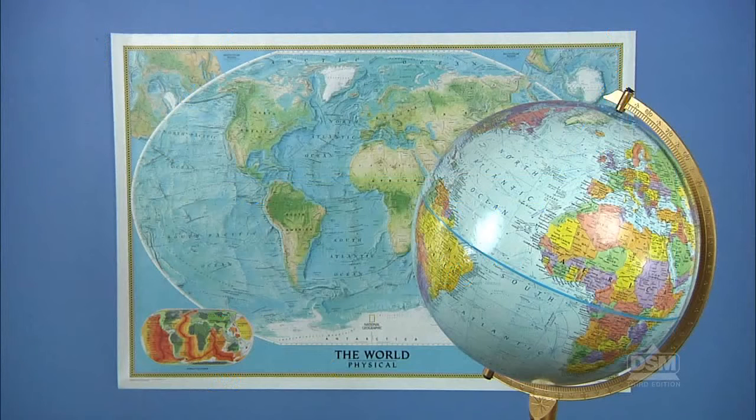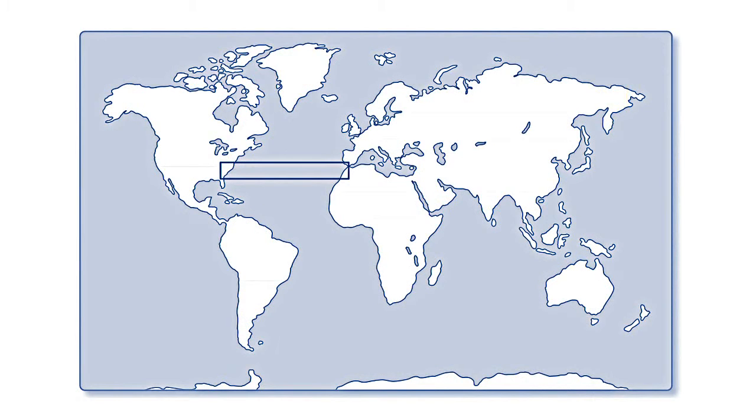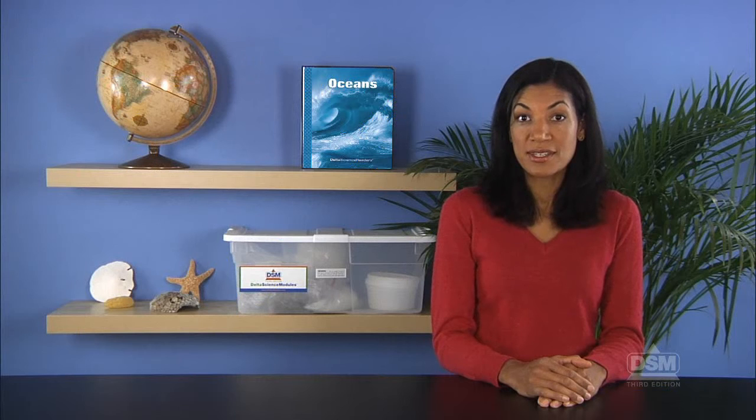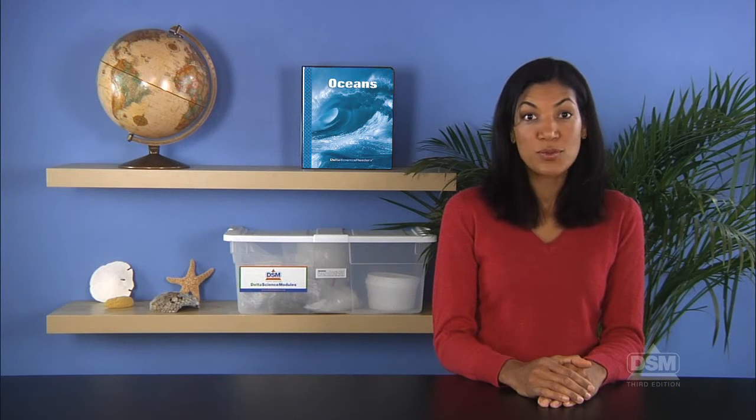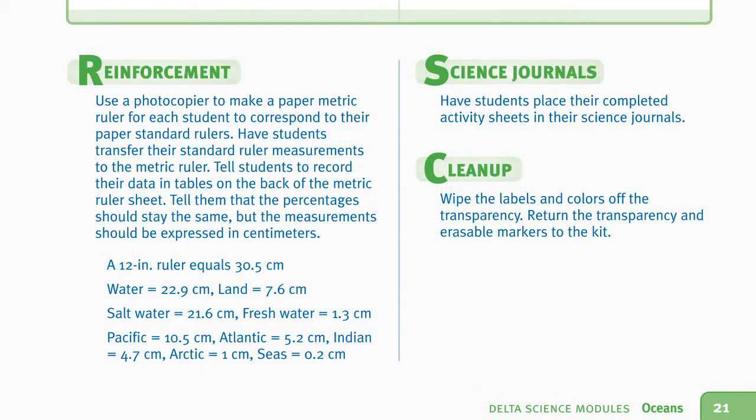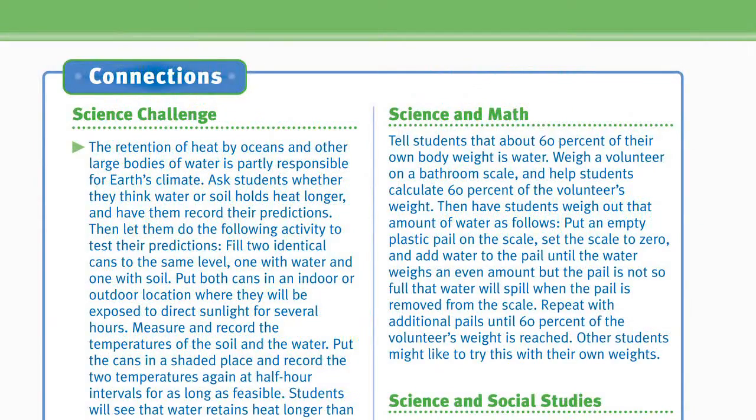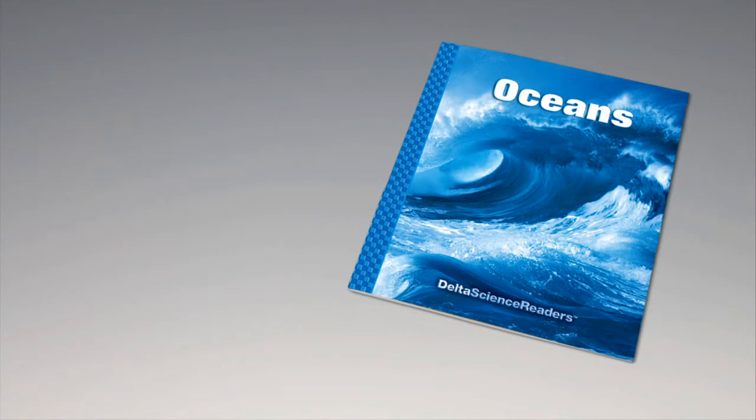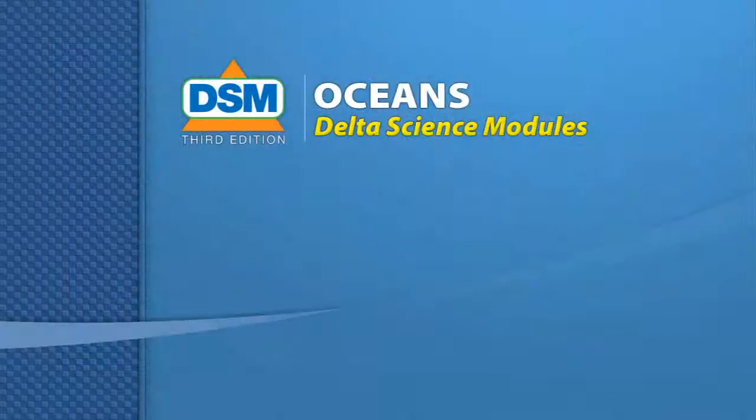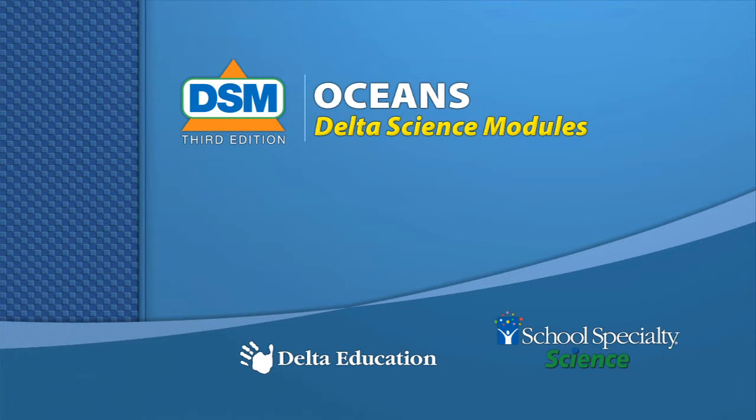Finally, post the physical map of the world ocean, and have students find the section they profiled and compare it with their own maps. To conclude the activity, discard the paper scraps. Make sure to leave the model on display throughout the module. For science background, reinforcement activities, curriculum connections, and information about the Delta Science Reader, please consult your DSM Teacher's Guide.